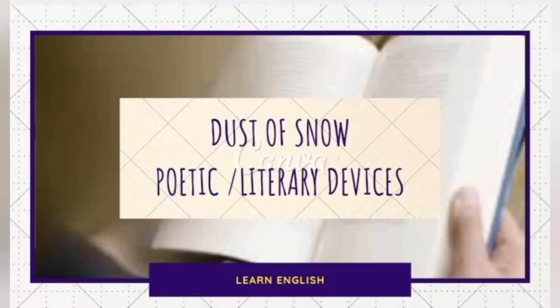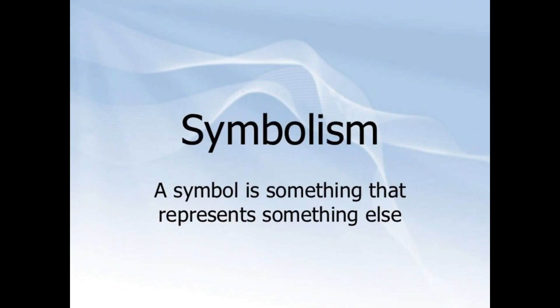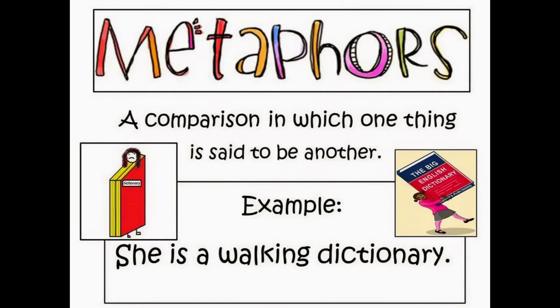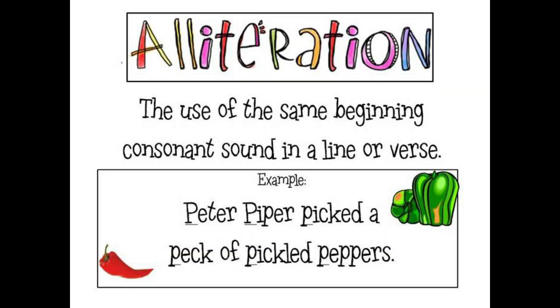Now let's discuss poetic devices. First is symbolism, which means a word that symbolizes something. For example, the crow and hemlock tree signify his depression and sadness. Second is metaphor, which means comparison between two things. For example, dust of snow.